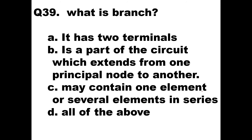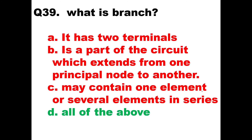Question number 39: what is a branch? The options are: it has two terminals; it is a part of the circuit which extends from one principal node to another; it may contain one element or several elements in series. All three statements A, B, and C are true in explaining what a branch is. So option D, all the above, is the right answer.